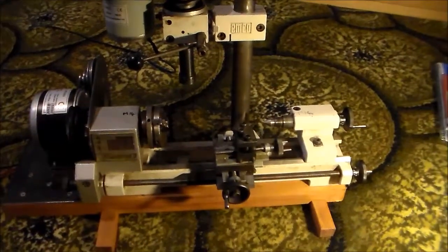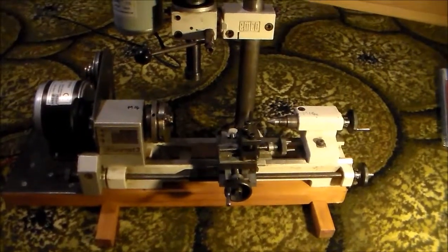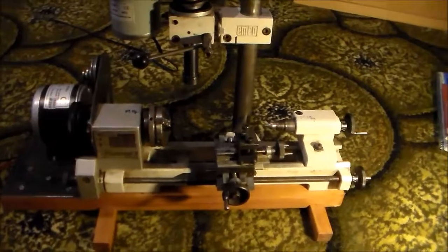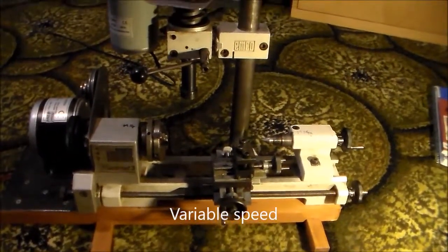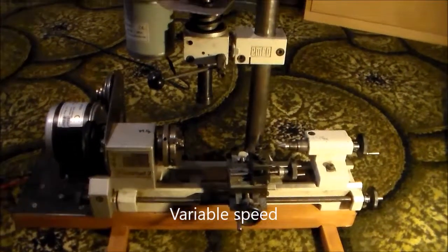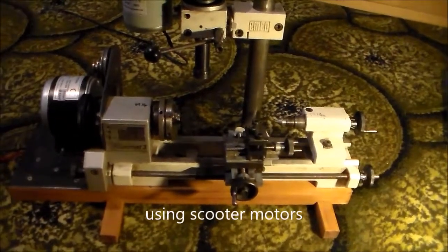This is an Emco Unimat 3. There are a couple of other videos on YouTube which show this lathe, but the reason I wanted to do another video is just to show it fitted with variable speed motor drives, which I think is a marvellous addition.